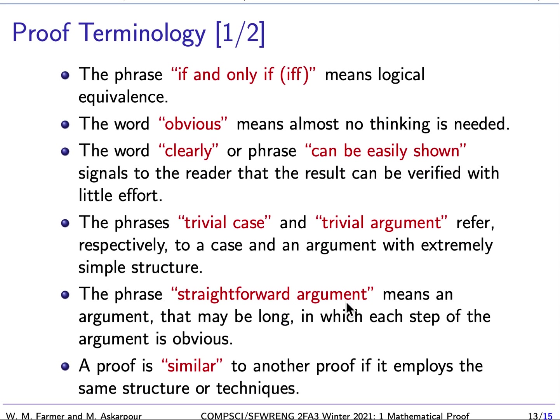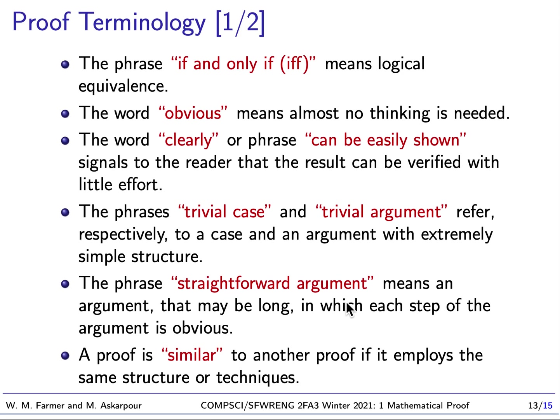Okay, so I'm going to end with some basic proof terminology that comes up all the time. And this will, I hope, help you out a bit. The phrase, if and only if, which is abbreviated as IFF, it means logical equivalence. So if I say A, if and only if B, what I mean is A implies B and B implies A. The word obvious, when you see it in a proof, it means almost no thinking is needed. It is helping the reader by saying, you shouldn't need to think long about this. This is an obvious fact. The word clearly, or the phrase can be easily shown, means that the result can be verified with little effort. It may not be obvious, but if you just put in a little bit of effort, you'll see that this is true.